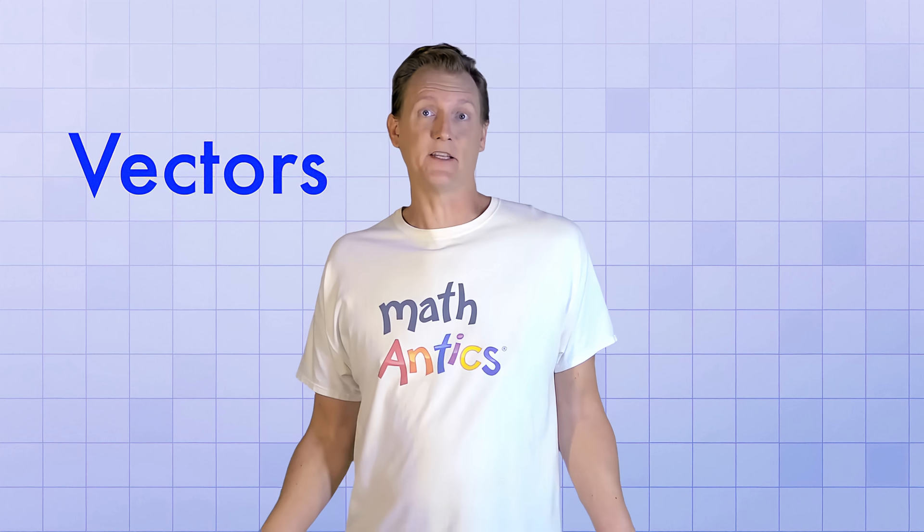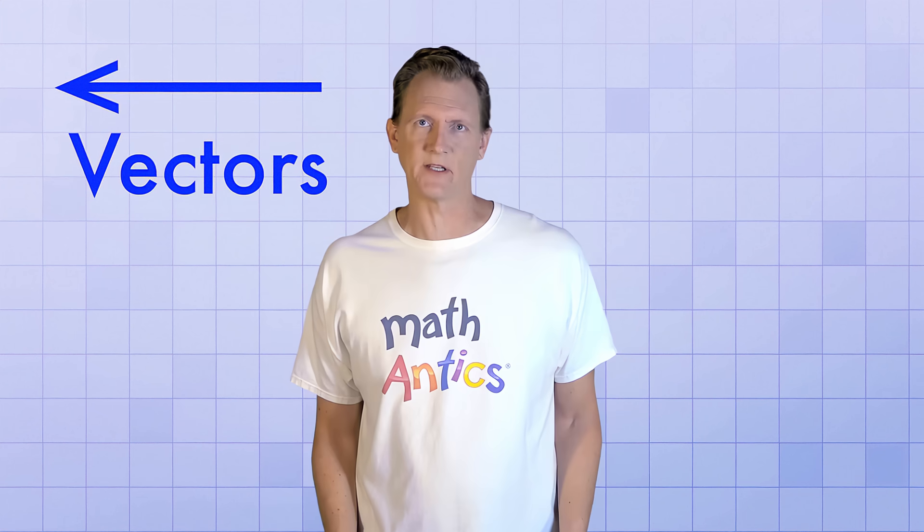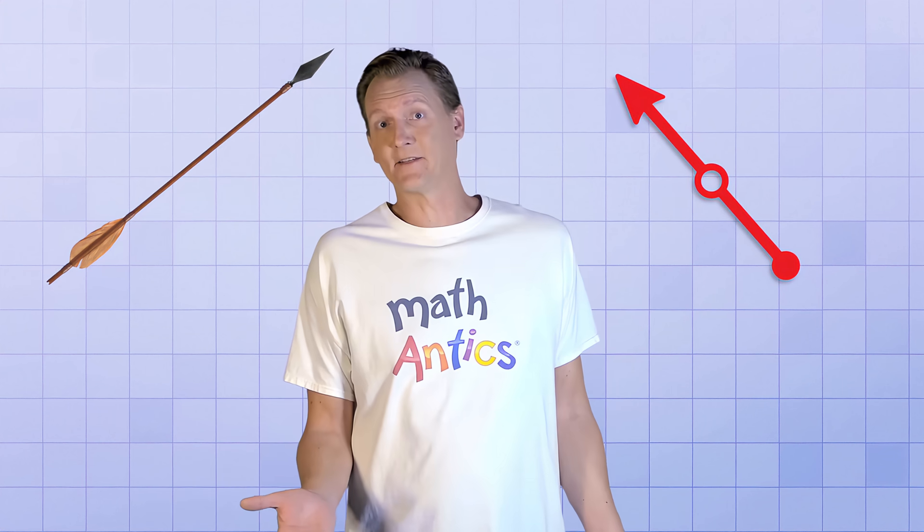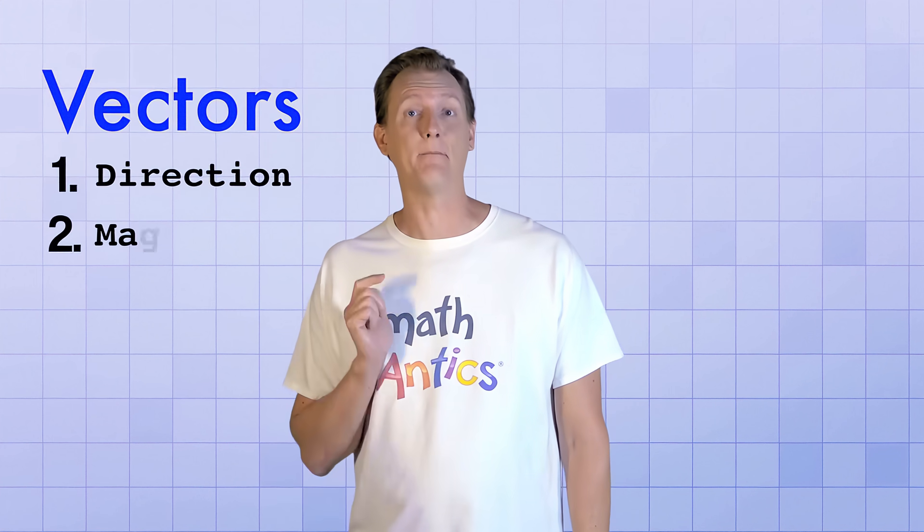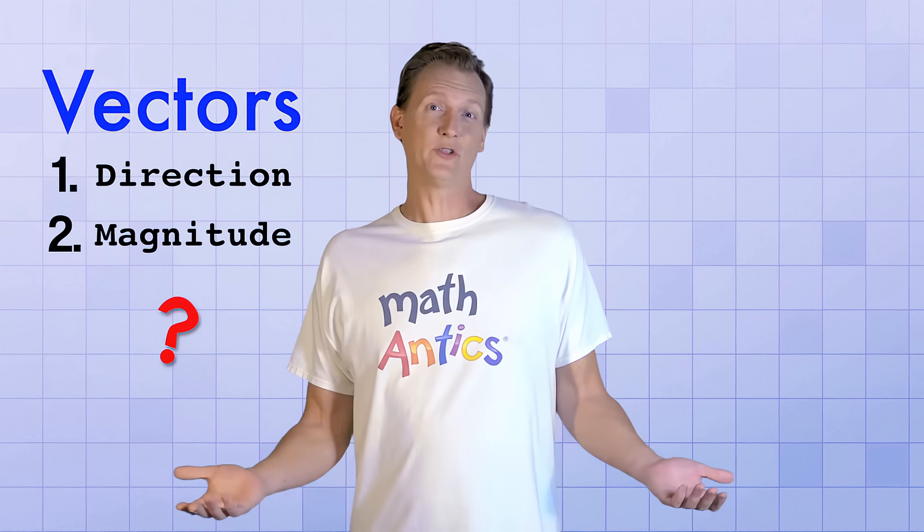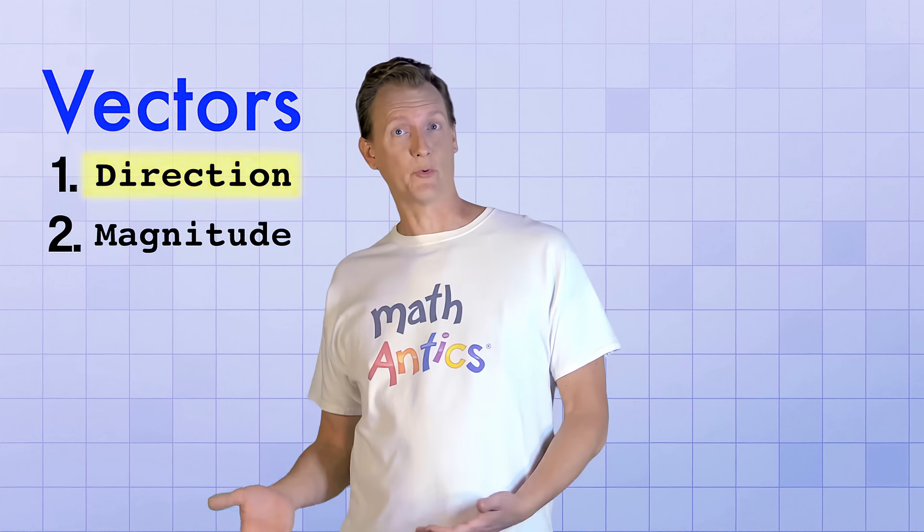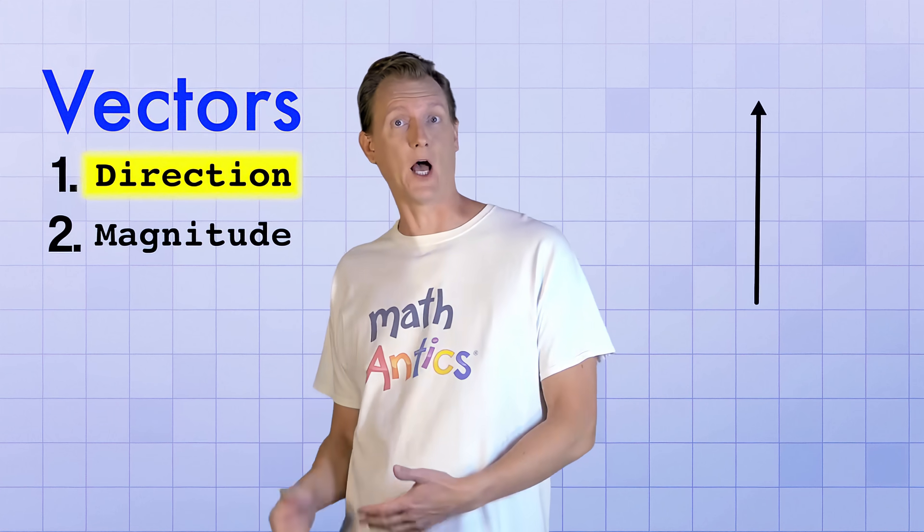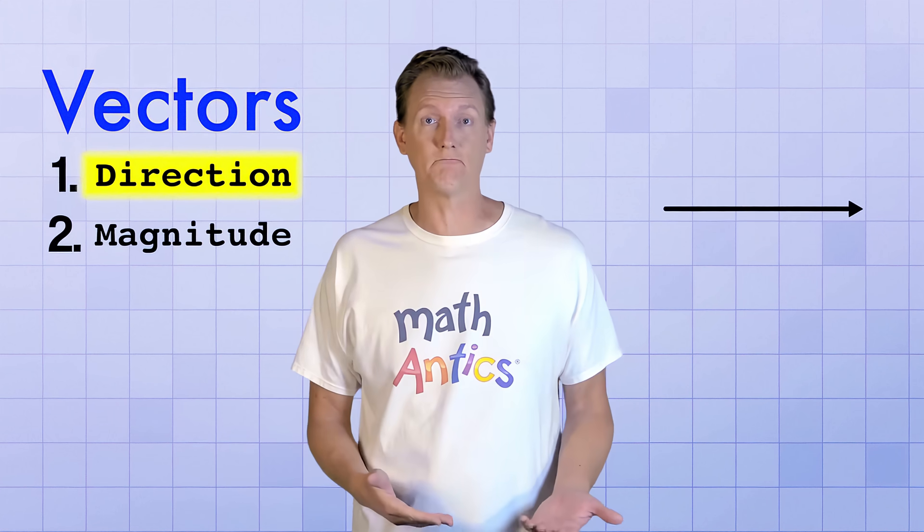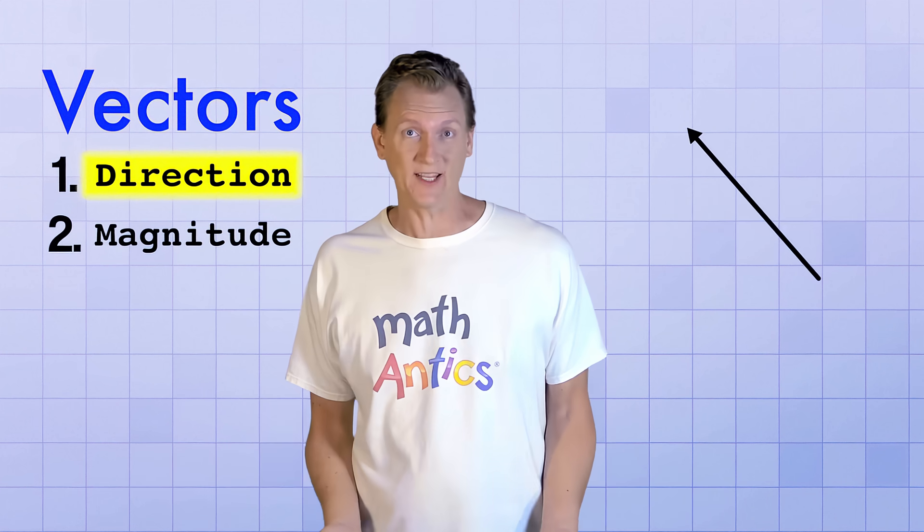Vectors are basically just arrows. In real life, an arrow can have all sorts of different properties. For example, this arrow is made of wood and has feathers. While this arrow is red plastic with a round thingy at the end. But in math, the arrows we call vectors only have two properties. They have a direction and a magnitude. What do those two properties mean? Well, direction is pretty obvious. It's just which way the arrow or vector is pointing. It could be up, down, left, right, or just about any direction you can think of.